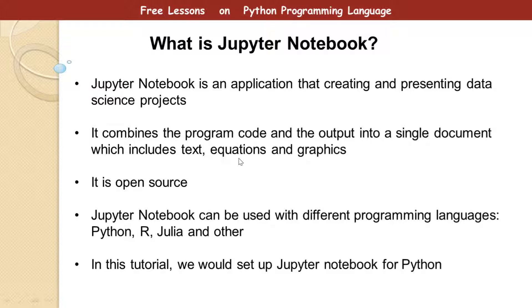Jupyter Notebook combines program code into a single document which includes text, models, graphics, equations, plots, and so on. Jupyter Notebook is open source and can also be used with different programming languages like Python, R, Julia, and others.